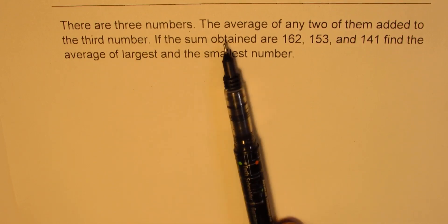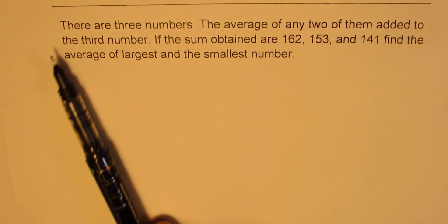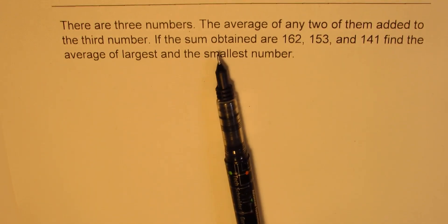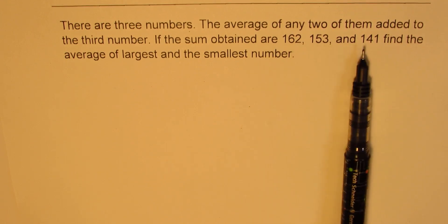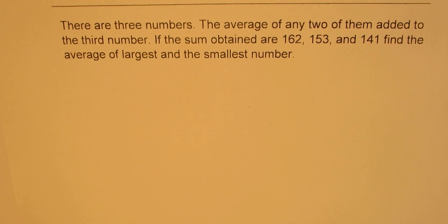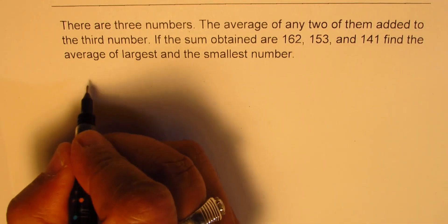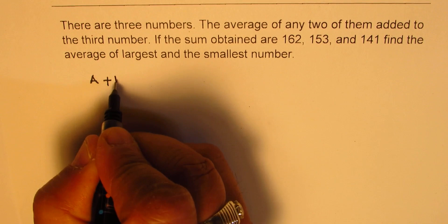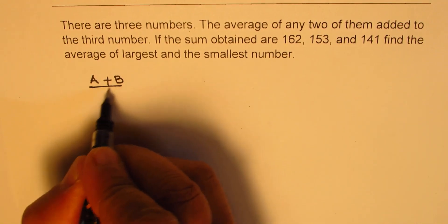And this time we are saying there are three numbers, the average of any two of them added to the third - if the sum obtained are this, this, and this, find the average of the largest and the smallest number. Well again we know we are talking about the same thing, and see how much time it takes.